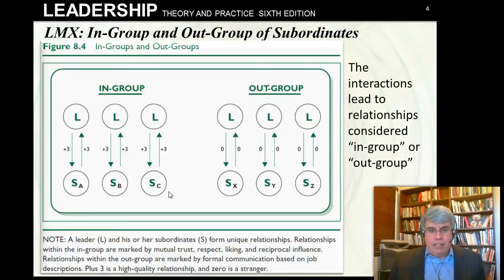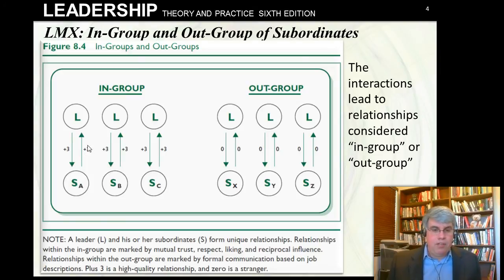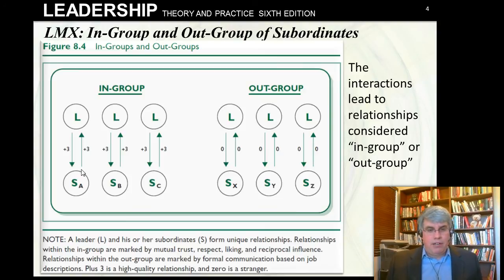Looking at these vertical dyad linkages, the leader may have really good exchanges with subordinate A — when they interact, both the leader and subordinate benefit, represented as plus three to each arrow. Subordinates B and C also have real positive relationships. The leader forms a trusting relationship, the subordinate tends to like the leader, they're open to influence from one another — these are good relationships.